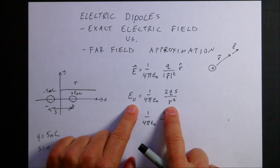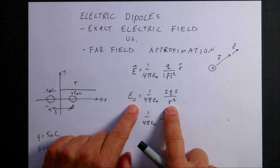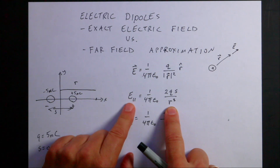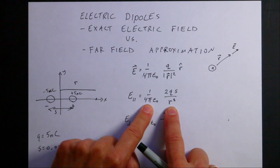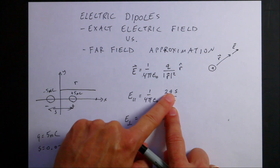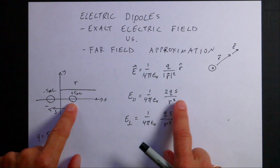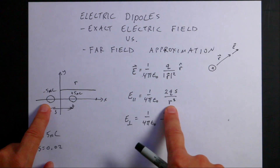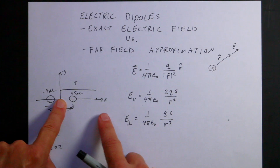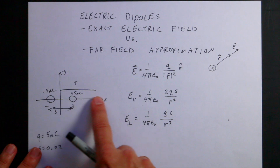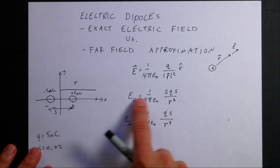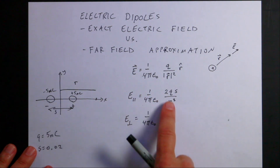This is the far-field approximation for the electric field due to a dipole. In this expression, E is the magnitude of the electric field — not the vector, just the magnitude. The term 1 over 4π ε₀ is your electric constant, nine times ten to the ninth. Two times Q is the charge, S is the separation distance, and R is the distance from the center of the dipole to that point. This subscript parallel means it's the field along the axis of the dipole.